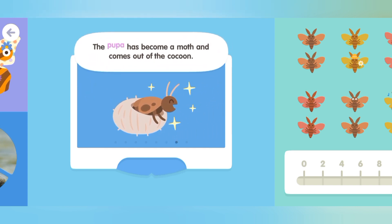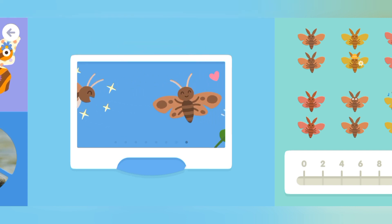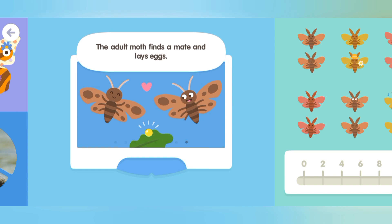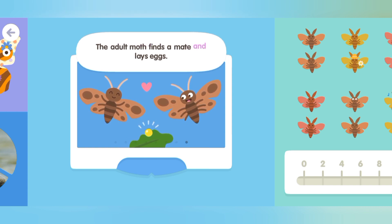The pupa has become a moth and comes out of the cocoon. The adult moth finds a mate and lays eggs.